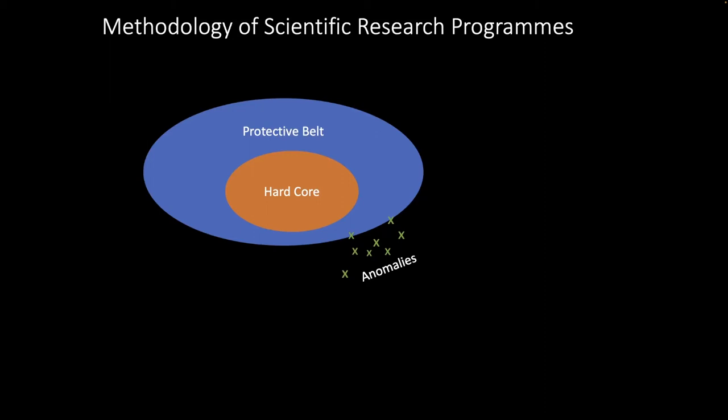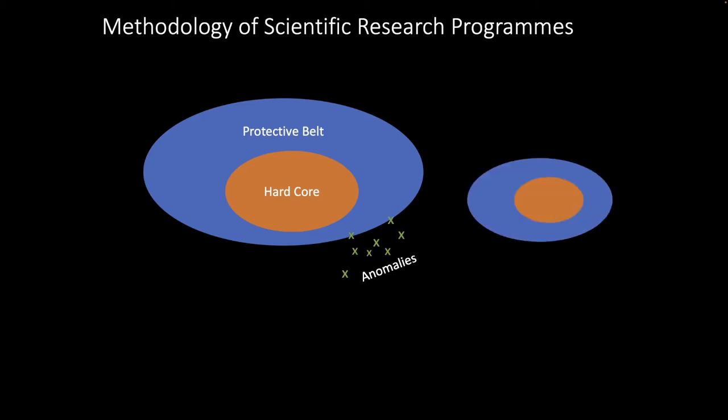Now another aspect of the methodology of scientific research programs is comparative. So you might have multiple research programs going on at once, and might be competing with each other under certain conditions. This is sort of more like Feyerabend's pluralism. In a way for Lakatos, there are activities like normal science and like scientific revolutions going on simultaneously most of the time.